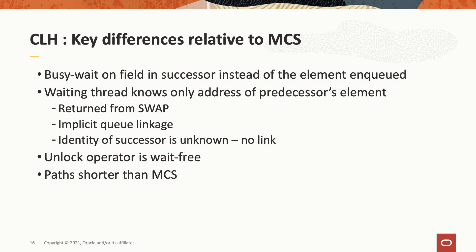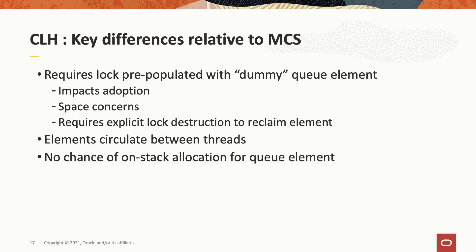We'll briefly contrast MCS and CLH. Under CLH, threads busy wait on a field in their successor's queue element instead of the element they originally posted to the queue. Waiting threads know only the address of the predecessor element — that is, the address returned from the atomic swap operation. The unlock operator in CLH is wait-free, and the paths are somewhat shorter than in MCS. CLH, however, requires pre-populating locks with so-called dummy queue elements, which impacts adoption because of space concerns, and requires explicit lock destruction to reclaim those dummy elements. In CLH, elements circulate or migrate between threads, meaning there is no chance of on-stack allocation for queue elements.